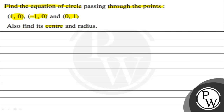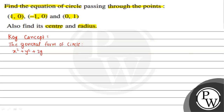Also find its center and radius. The key concept to solve this question is the general form of a circle, given by x² + y² + 2gx + 2fy + c = 0, where the center is (-g, -f) and the radius is √(g² + f² - c).